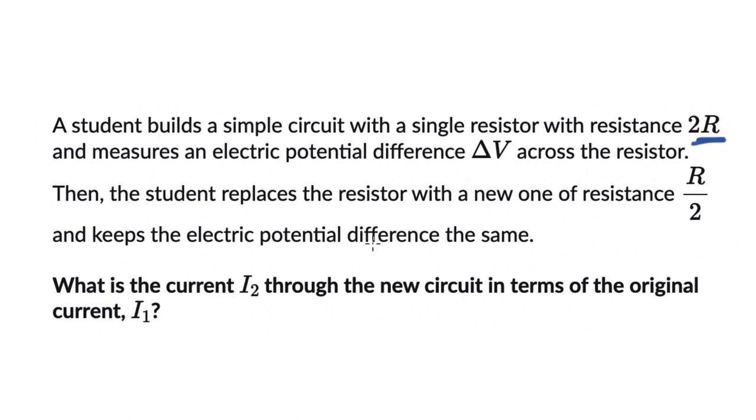Then the student replaces this resistor with a new one of resistance R/2 and keeps the electric potential difference the same. We need to figure out the current I₂ through the new circuit in terms of the original current I₁.